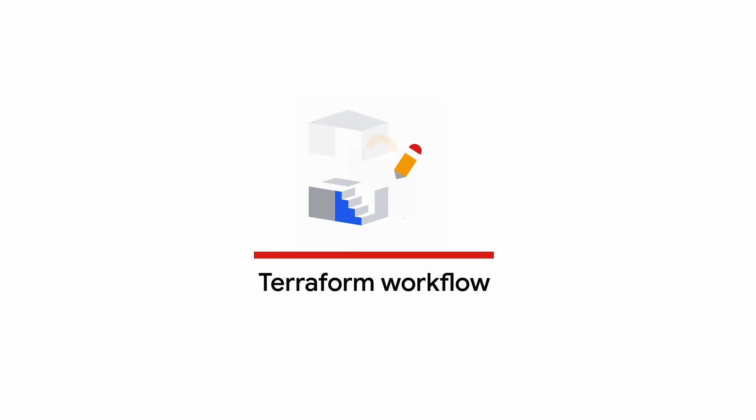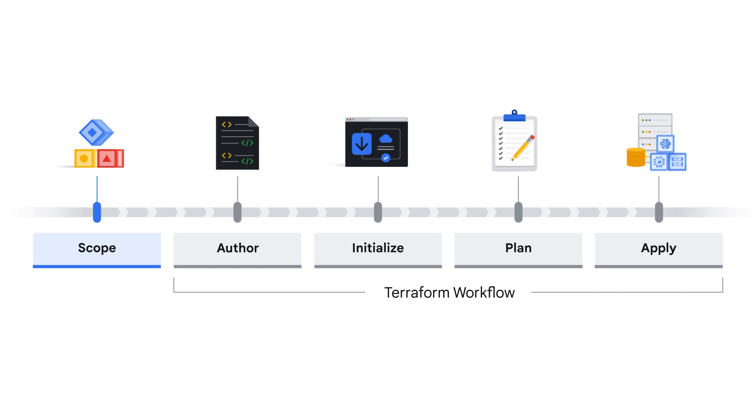Let's use a real-world example and see how Terraform works. In a common two-tier architecture, you would have a pool of web servers that use a database tier. How can Terraform help? Let me answer that by using the IAC workflow, which includes five different phases. You start with the scope phase, where you scope the requirements for the Google Cloud resources and plan how they should be connected.